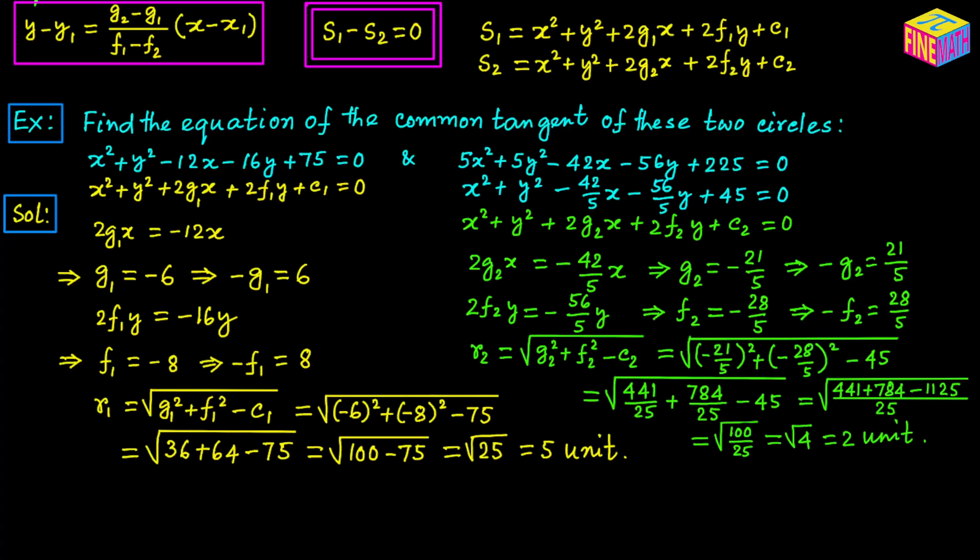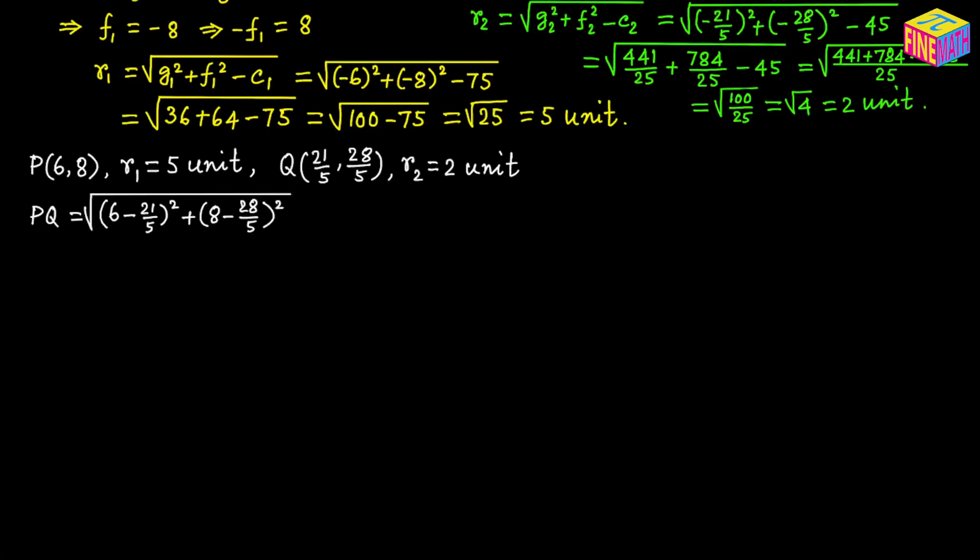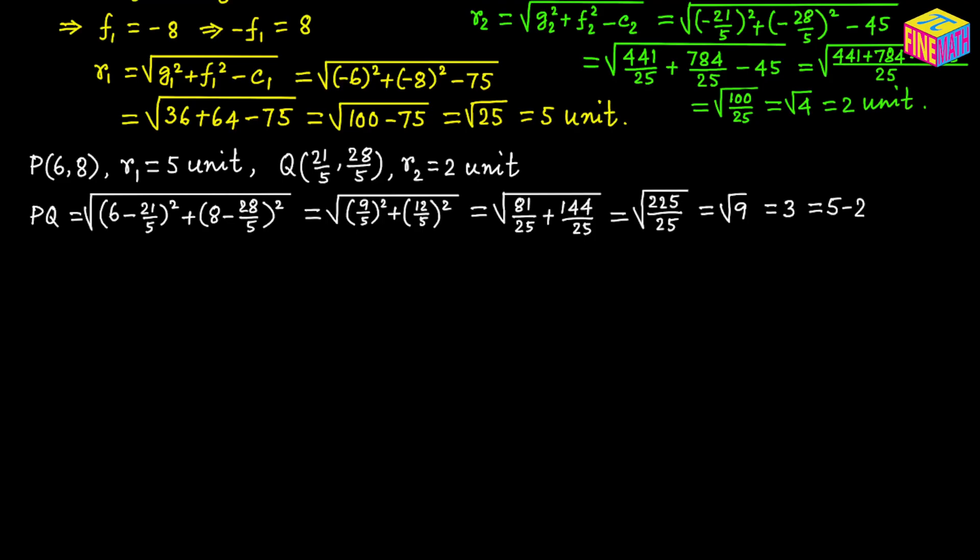Now let's study the relative position of these two circles. They might be touching externally, touching internally, intersecting, or disjoint — we need to determine which. Using the distance formula, the distance PQ turns out to be positive 3, which can be written as 5 minus 2 — the difference of the two radii R sub 1 minus R sub 2. Since the distance between the centers equals the difference of their radii, these two circles must be touching each other internally, meaning they have only one common tangent.